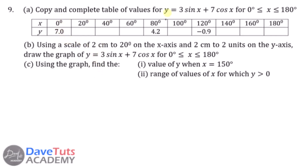We have this question on graphical solution to a trigonometric function. We are asked to copy and complete the table of values for y = 3sin(x) + 7cos(x) for values of x ranging from 0 to 180 degrees in incremental values of 20 degrees, just as shown on this table. We have some values already inputted, so we can use those to confirm we are on the right track.